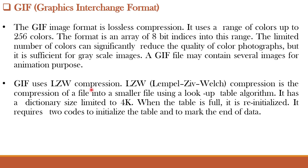Next is GIF, or Graphics Interchange Format. The GIF image uses lossless compression. It uses a range of colors up to 256, and the format is an array of 8-bit indices into this color palette. A GIF file may contain several images for animation purposes. GIF uses LZW compression — Lempel-Ziv-Welch compression — which compresses a file into a smaller file using a lookup table algorithm.